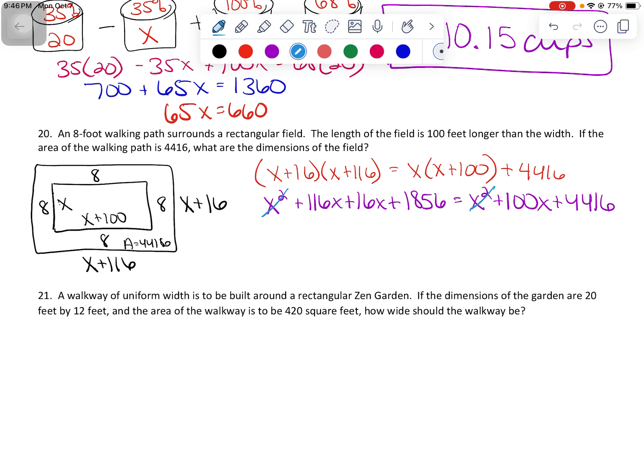Immediately, I'm going to get rid of my X squareds because they are going to cancel each other out. I'm going to combine these two X's and subtract the 100 to get it to the other side. And then I'm going to take my 4416 and subtract 1856. So 116 plus 16 minus 100 is 32X. And then 4416 minus 1856 is 2560. Dividing by 32 gets me a nice even X equals 80.